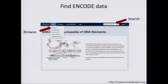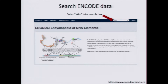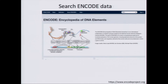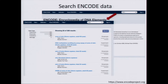Now getting to finding ENCODE data — I'm not going to do a live demo, but these slides correspond to a walkthrough in the exercises linked off the portal, so you can follow along. The URL is encodeproject.org. There are two ways to find ENCODE data: you can browse under the data menu by clicking on assays, or you can do a free text search. Starting with a search example: type 'skin' into the search box, and you'll see a list of results matching that text string on the ENCODE portal.